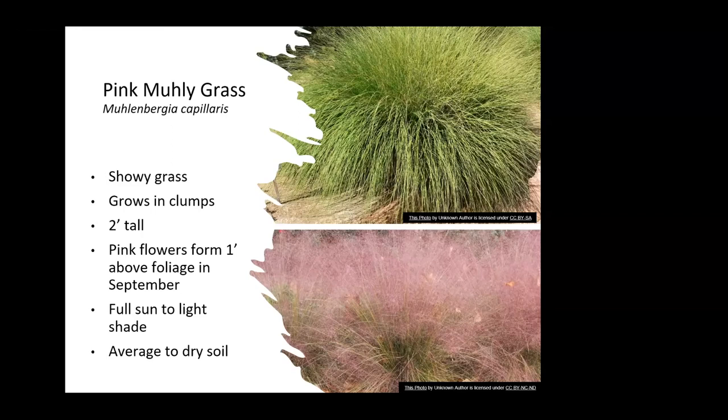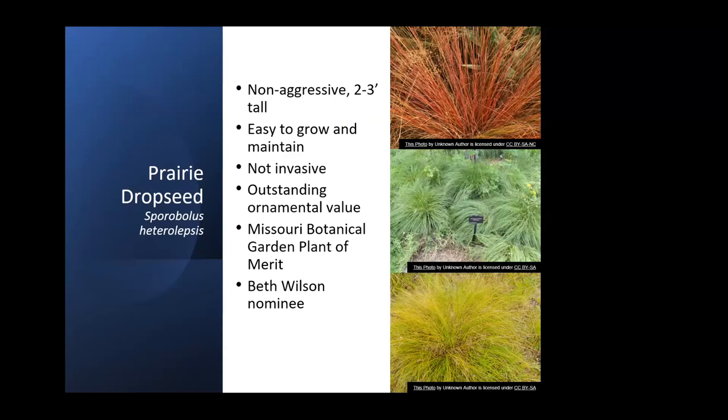Prairie dropseed is a grass nominated by Beth Wilson, a horticulture agent for Extension. It's not an aggressive one, it's pretty easy to grow and maintain, it has really good ornamental value, and it is a Missouri Botanical Garden Plant of Merit. This is another grass that's not too tall that you can consider using to add variety to your garden.